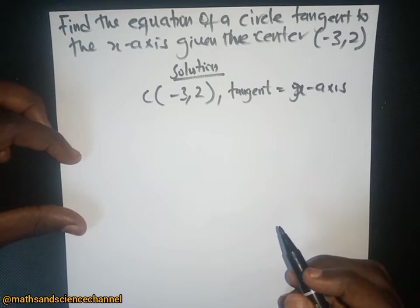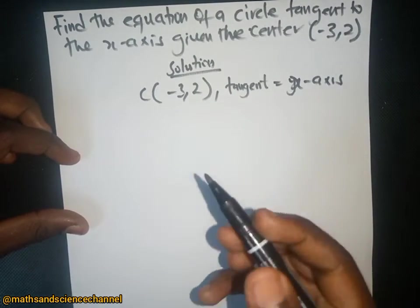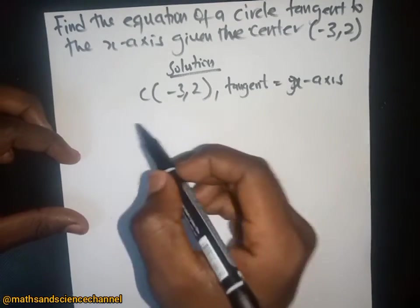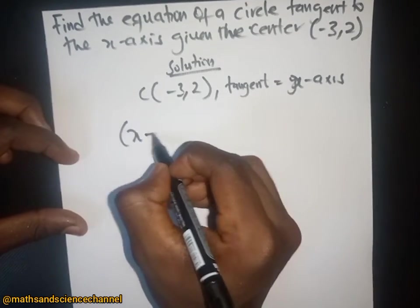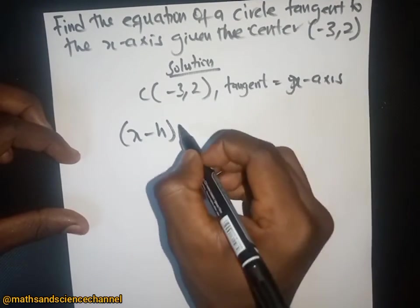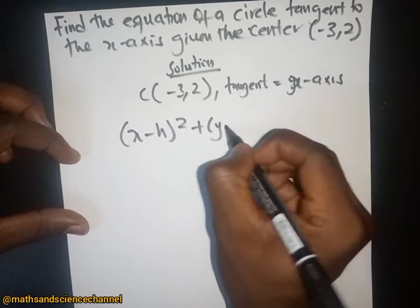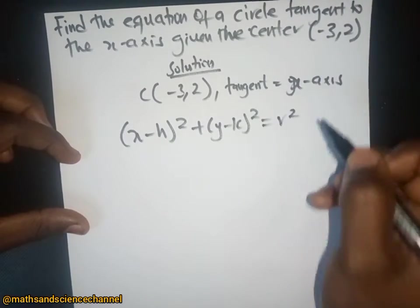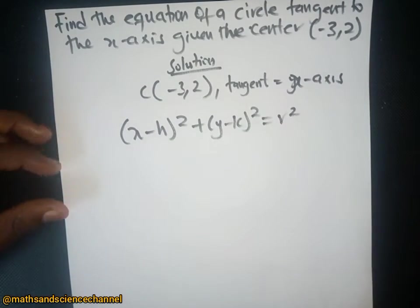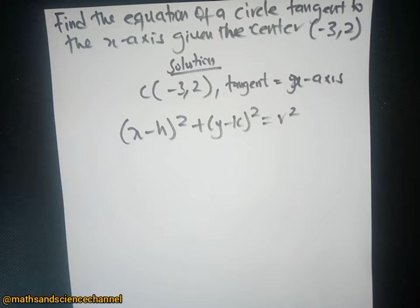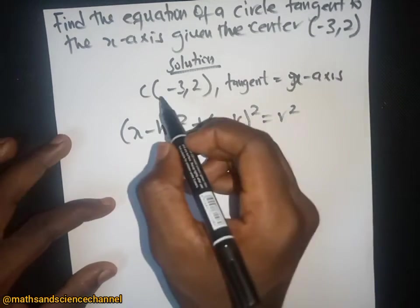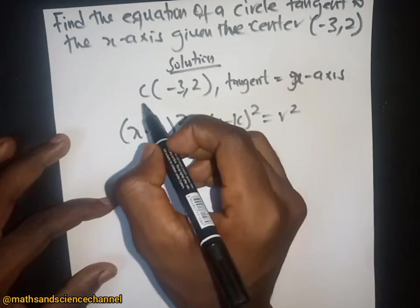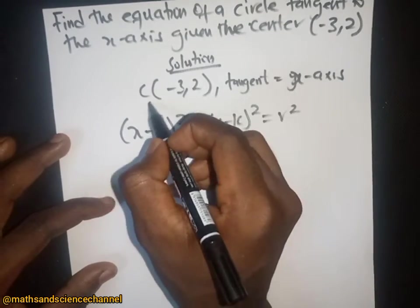In this case, generally we have the equation of a circle as (x minus h) squared plus (y minus k) squared equals r squared, where r represents the radius and h and k represent the center. We have the center given as negative three and two.